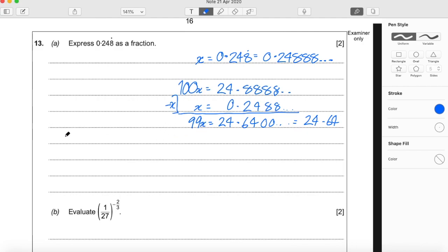So to find x, we divide by 99 both sides. So x equals 24.64 over 99.